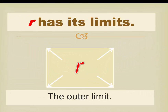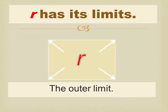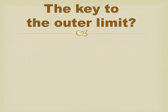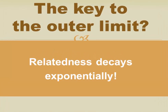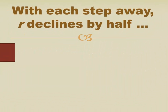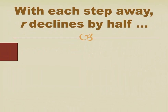But R has its limits, and in this presentation we're going to look at the outer limit of R. The key to the outer limit of R is pretty obvious, and this has to do with the fact that relatedness decays exponentially, and it does so at a very rapid rate. With each step that we take away from ourself in terms of relatedness, R will decline by half.